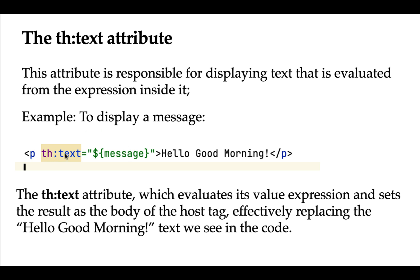Basically, the th:text attribute will evaluate this variable expression and print the result as text. If you notice here, the 'hello good morning' text is dummy data. Whenever the th:text attribute fails to evaluate the expression, it will print this 'hello good morning' dummy data.